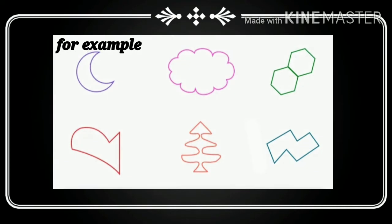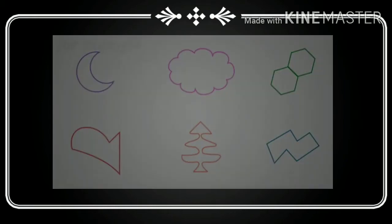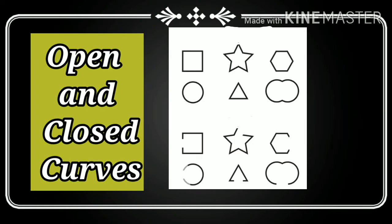Now, you can see these shapes. These are totally close, and they have same starting and ending point. Agar kisi bhi figure ko main banana start karungi kisi point per, to end bhi usi point per hooga. Oh figure jo hooga, hoa totally close hooga. Now you can find the difference between the open and close curve. Aasani se aap pata laga sakti hai koon sa close curve hai aur koon sa open curve hai.